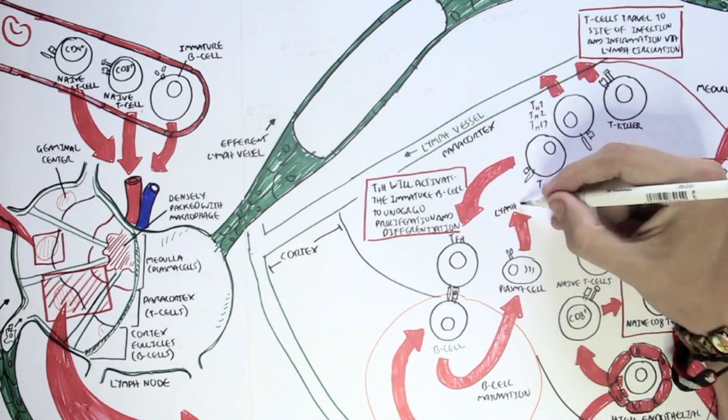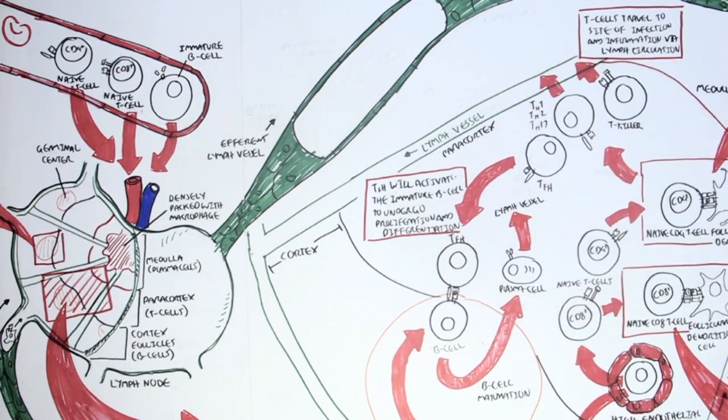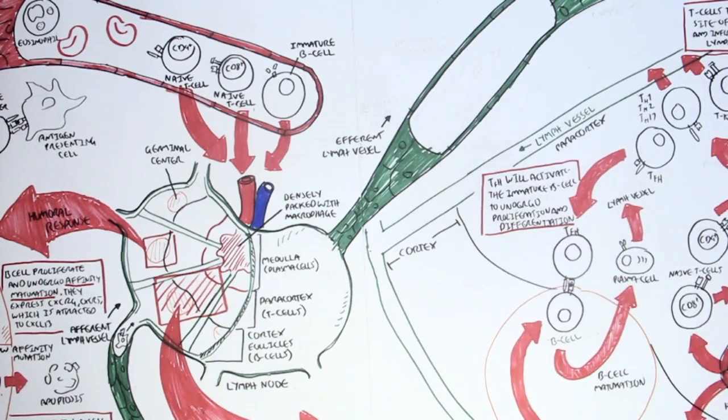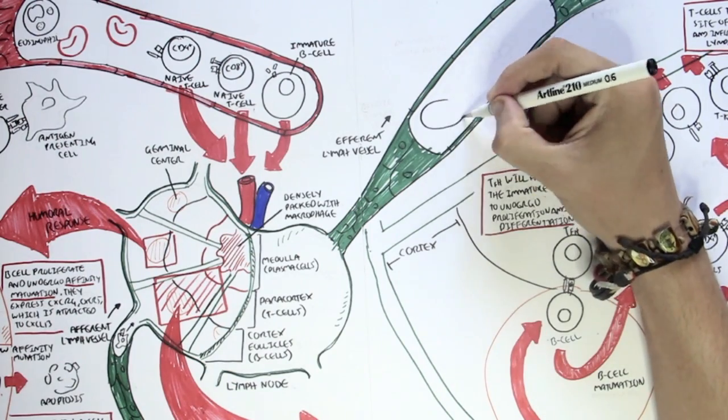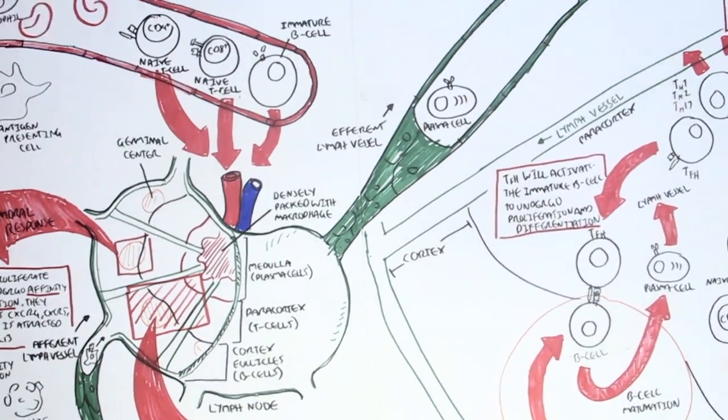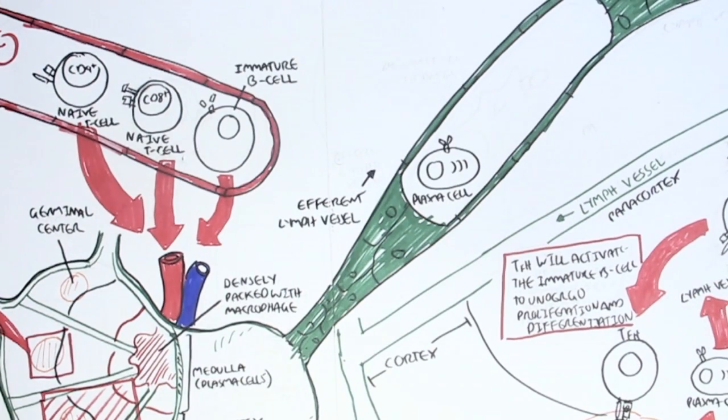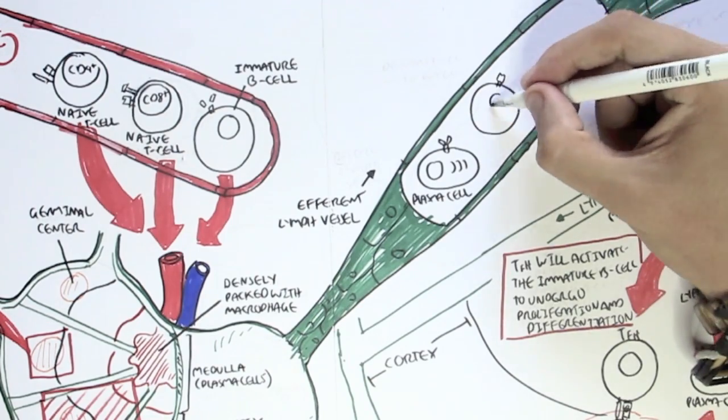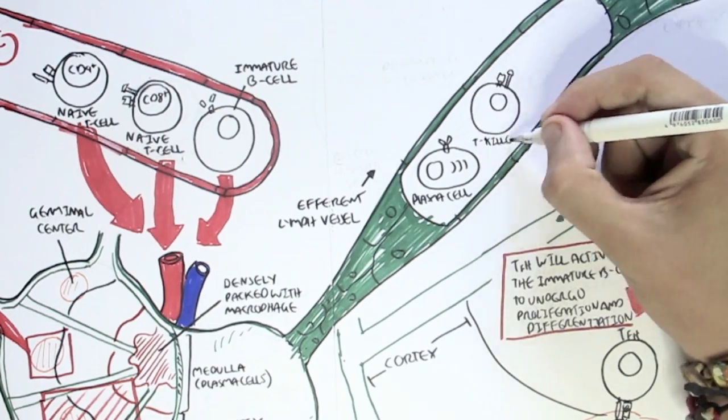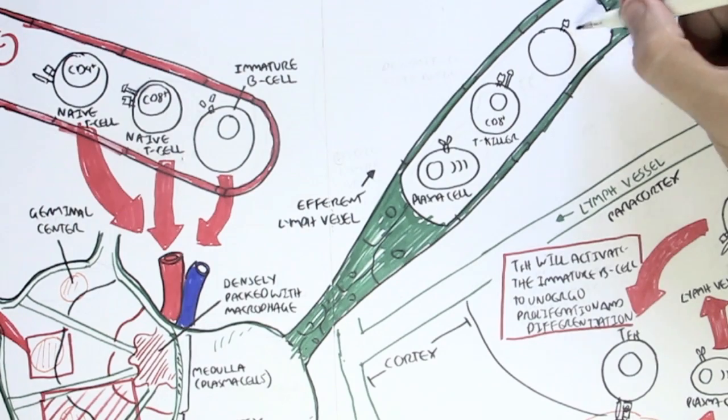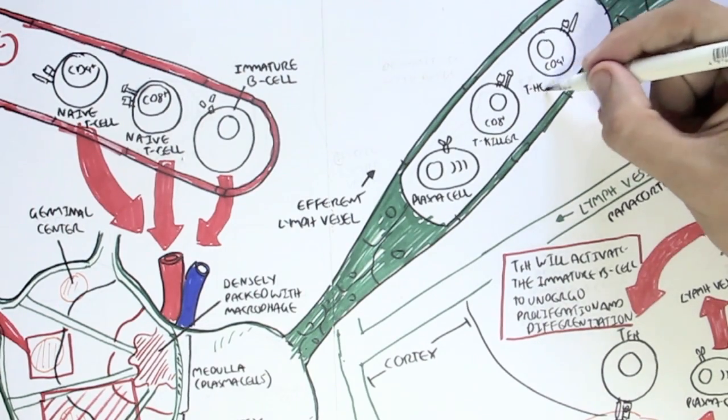In the last video, we looked at the formation of a plasma cell from an immature B cell, and then we learned that the plasma cells with the CD4 T cells and the CD8 T cells, the T helper and the T killer, they will want to leave the lymph node to initiate and promote the immune response, and these cells make up the adaptive immune response, the B cells and the T cells.